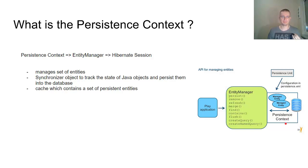So the persistent context is just a synchronizer object that tracks the state of the limited set of Java objects and makes sure that the changes of these objects are at the end put back into the database. A persistent context is like a cache, which contains a set of persistent entities. So once the transaction is finished, all the objects are detached from the entity managers and are no longer managed.